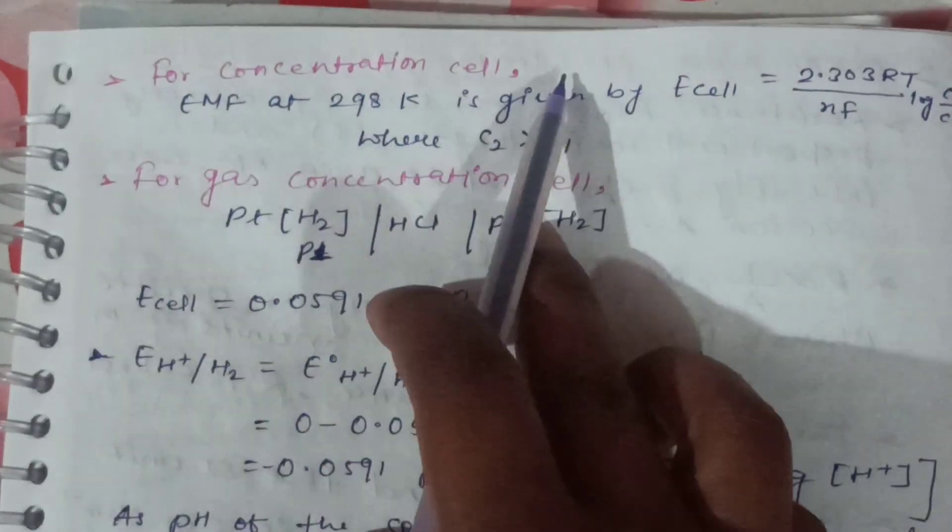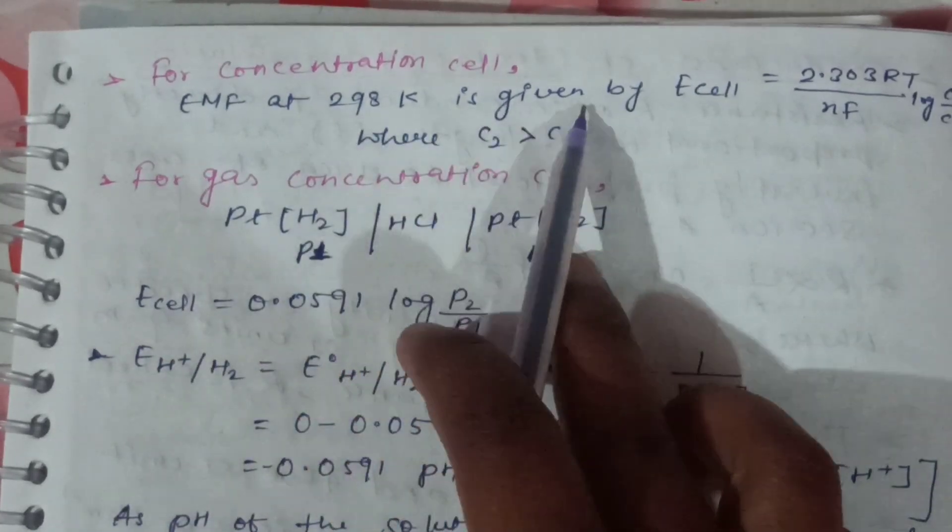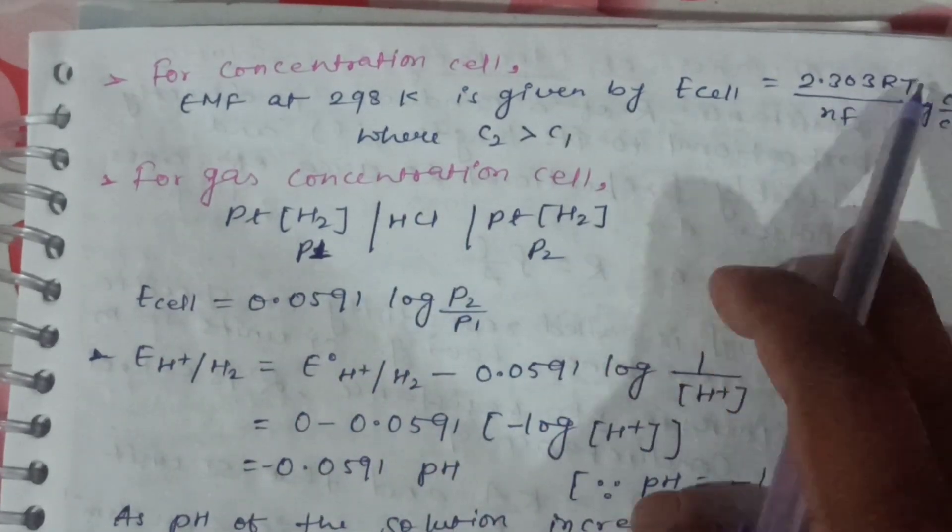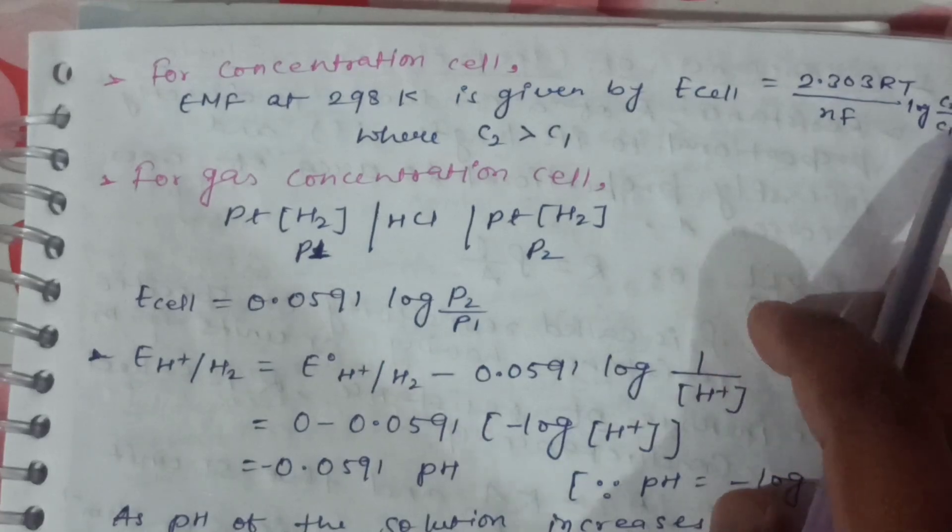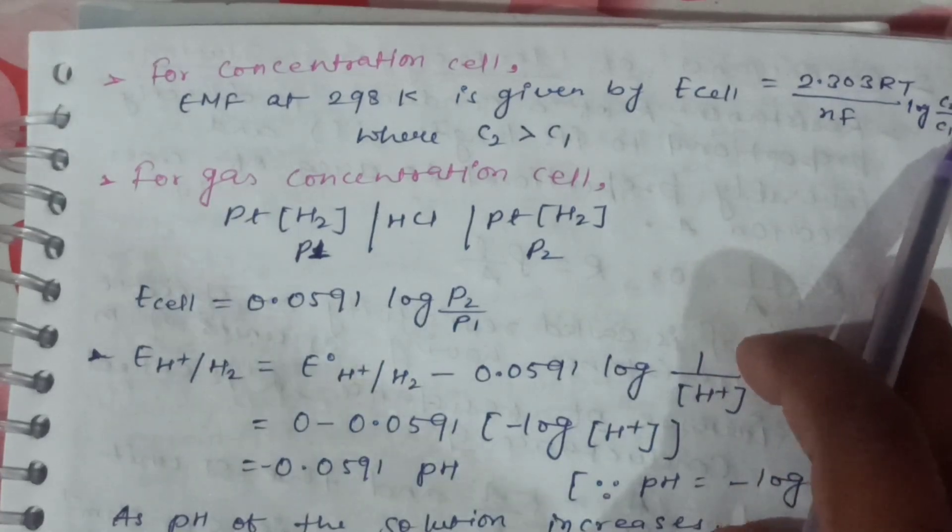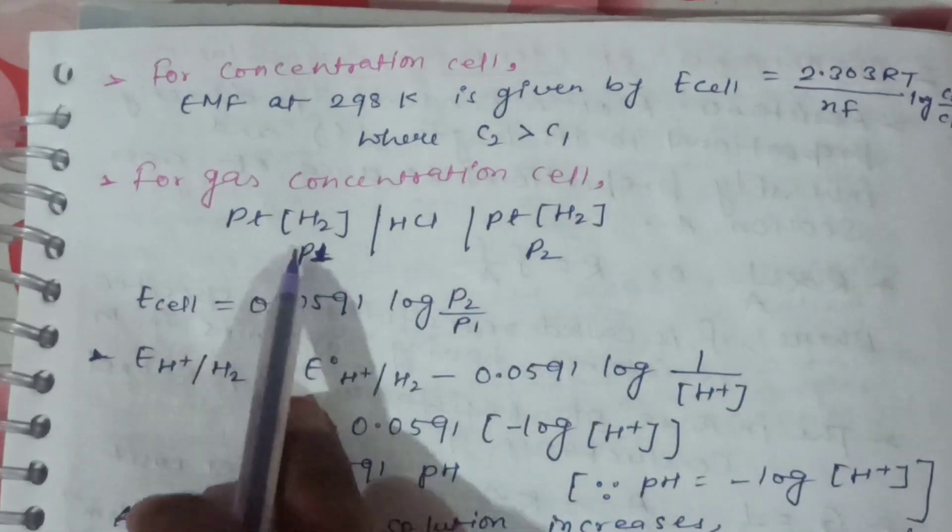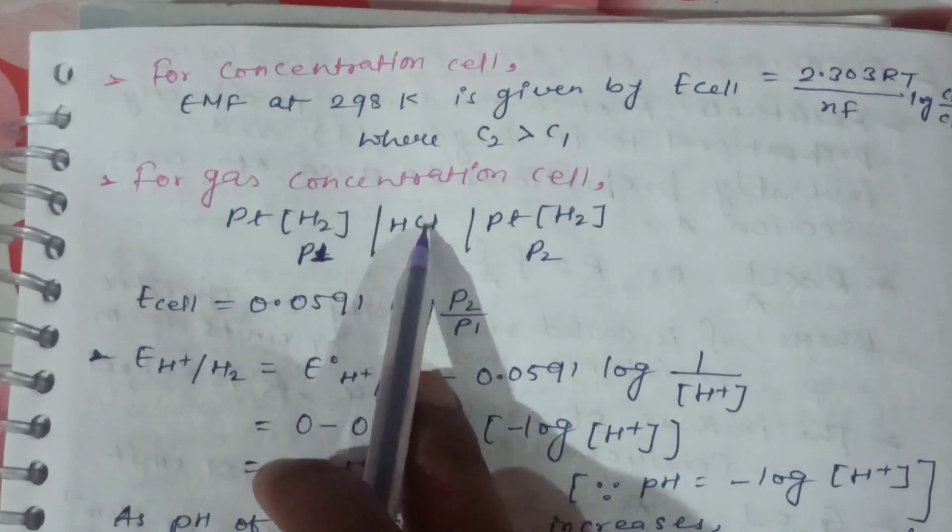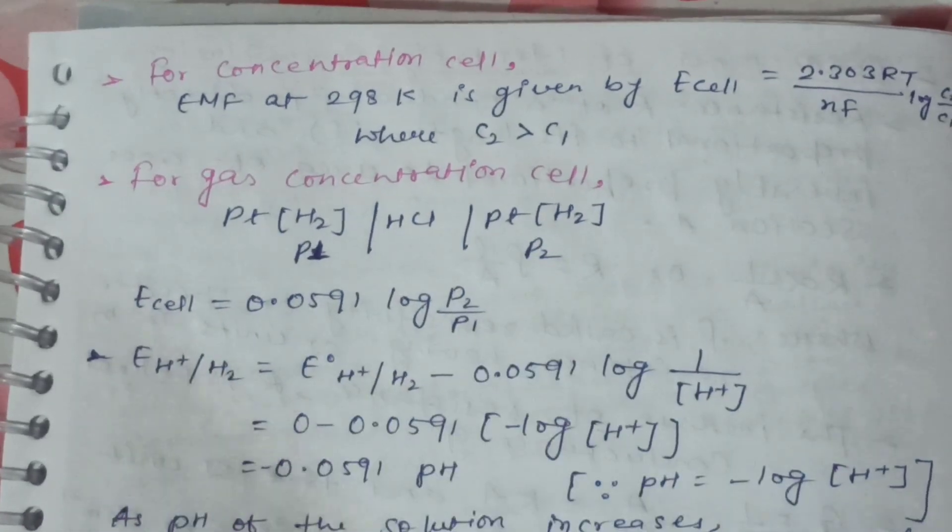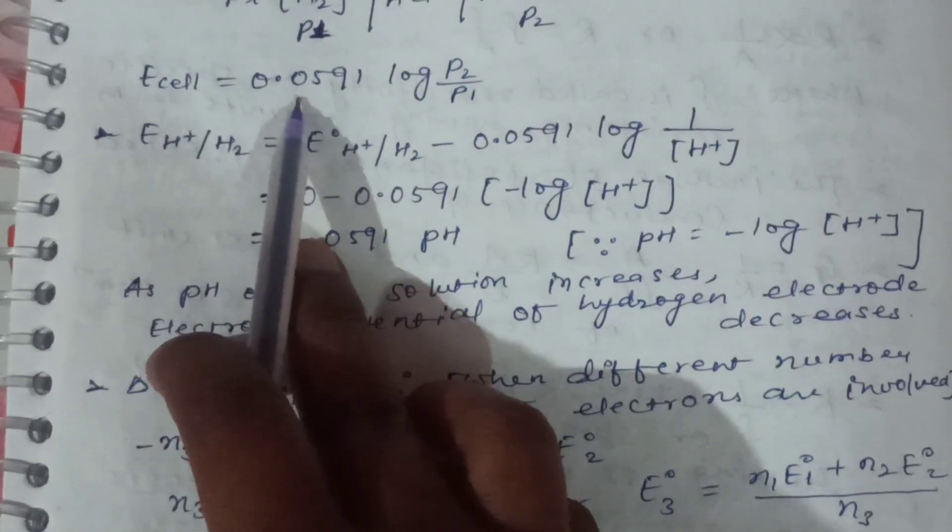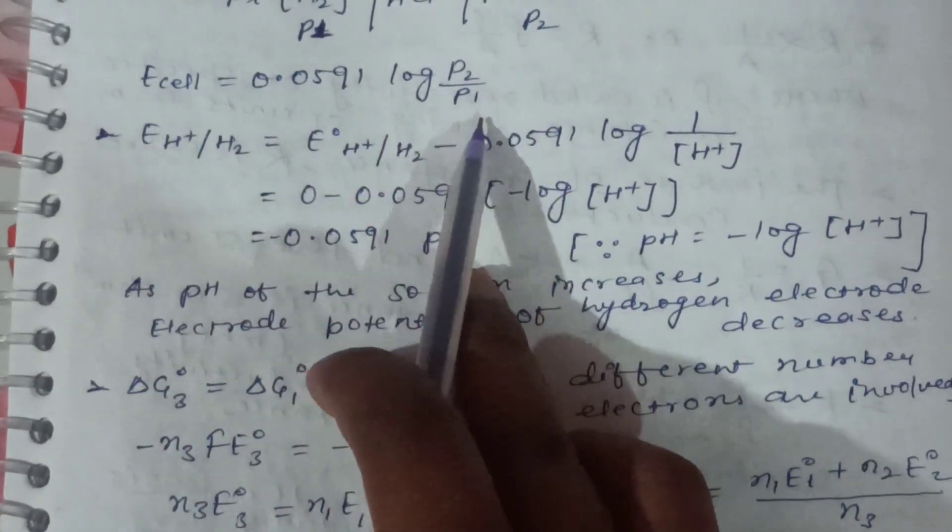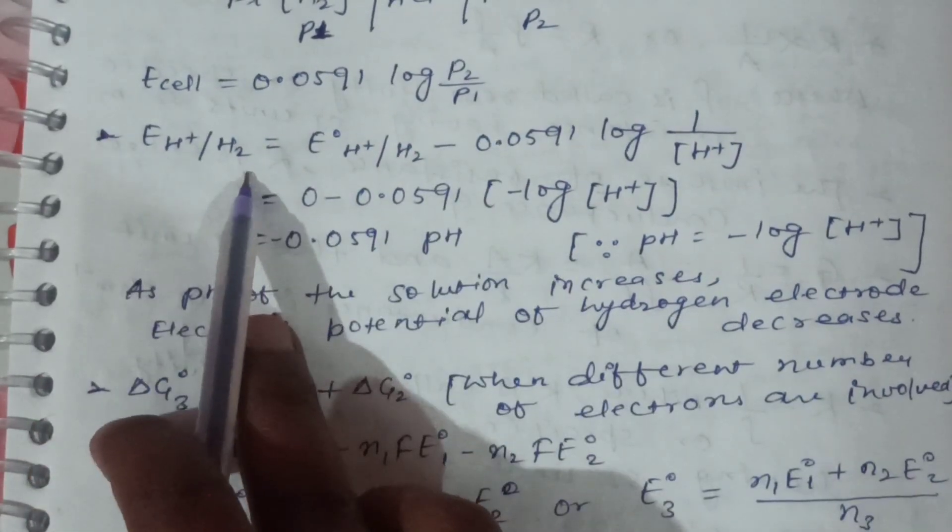For concentration cell, EMF at 298 Kelvin is given by E cell is equal to 2.303 RT upon nF log C2 upon C1, where C2 greater than C1. For gas concentration cell Pt H2, E cell is equal to 0.0591 log P2 upon P1.